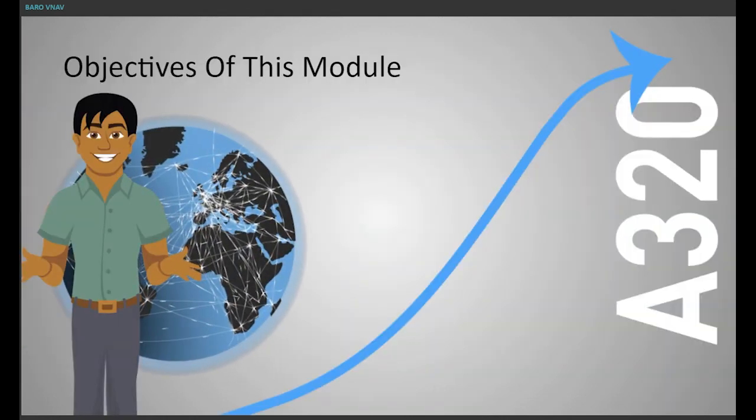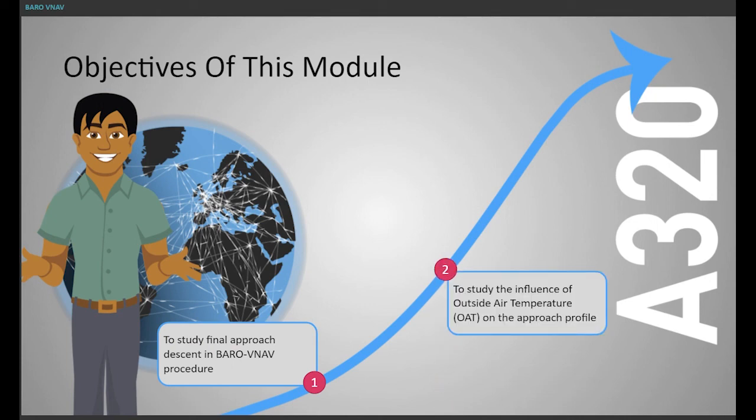So, we have now studied the final approach descent in the Barrow VNAV procedure, studied the influence of outside air temperature on the approach profile, and also studied obstacle clearance during the final approach segment.